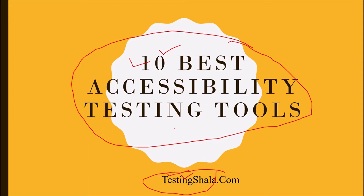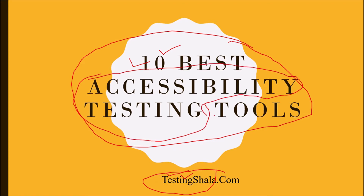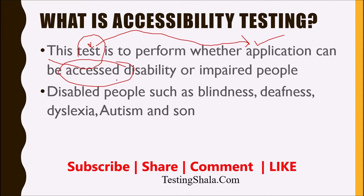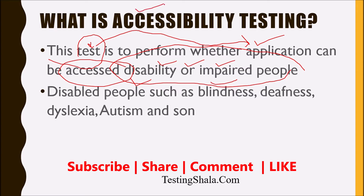Let us understand first of all what is accessibility testing before moving further to understand what are the 10 best tools available for it. Accessibility testing is a kind of testing performed to ensure whether an application can be accessed by both disabled people and enabled or impaired people. That is the main purpose — ensuring that both enabled and disabled people should be able to access the application.